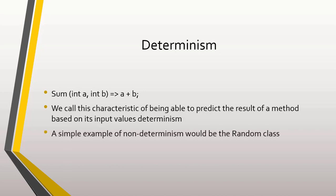A simple example of non-determinism would be the random class. With this class, we can generate pseudo-random numbers. Therefore, the output value of random methods cannot be determined from the input values supplied to its methods.